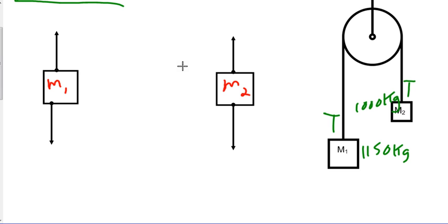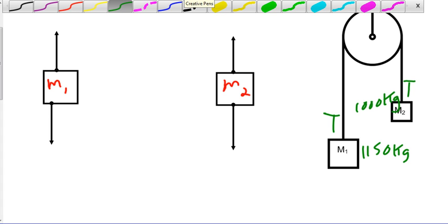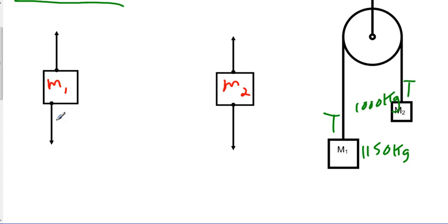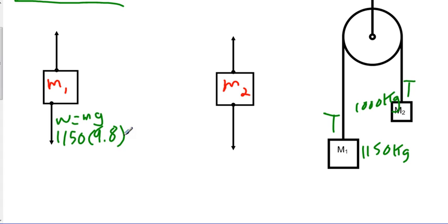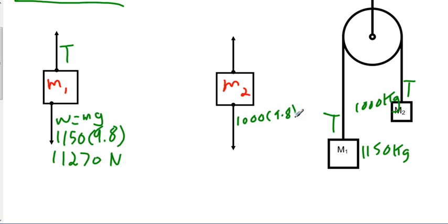Let's start filling in our vectors. The weight for M1 is equal to the mass times gravity: 1150 times 9.8, which equals 11,270 newtons. The tension T is unknown for now. For M2, the weight is 1000 times 9.8, which equals 9,800 newtons, and we again have our T going up.